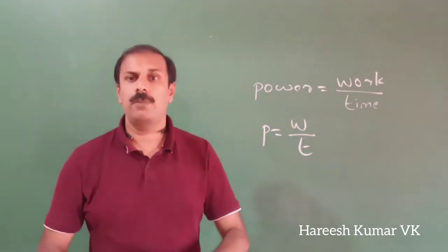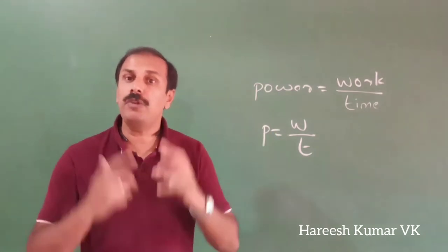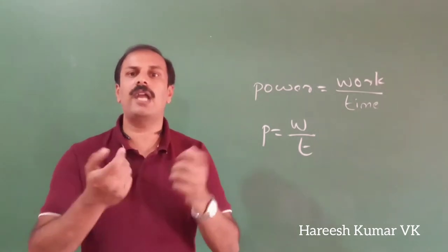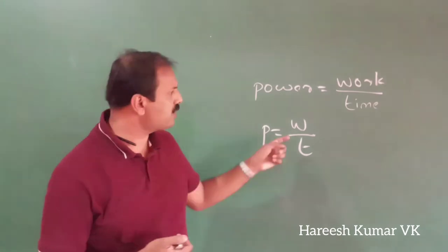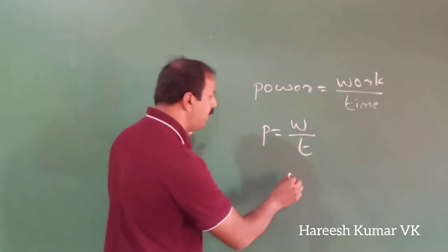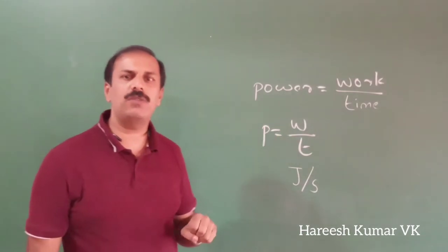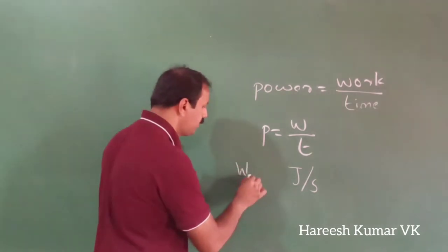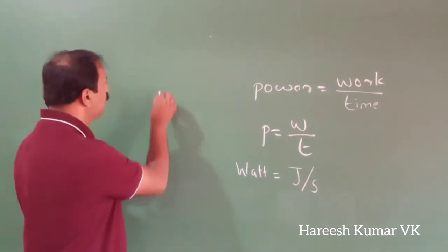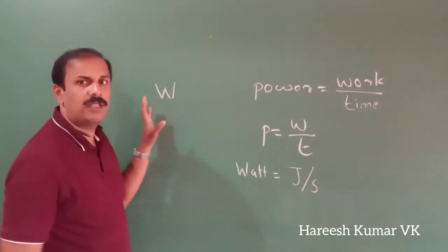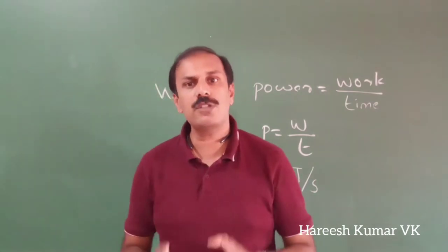We already calculated the work done for a boy climbing a step of 10 meters. If you also get the time and divide by it, you can calculate the power. Power is generally measured in joules per second, because work is in joules and time is in seconds. For joules per second, we have a single unit called watts. So 1 watt means 1 joule per second, written as W. The SI unit of power is watts.